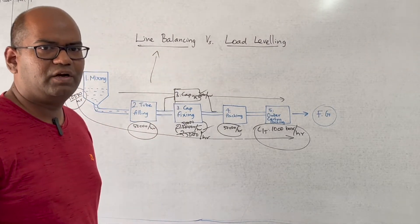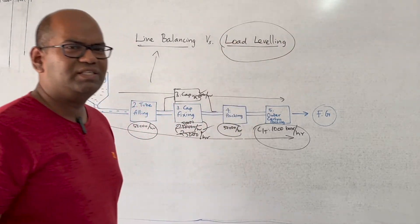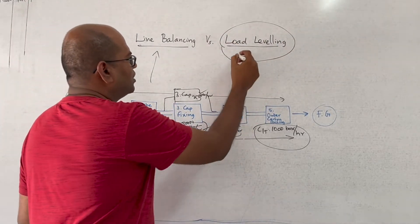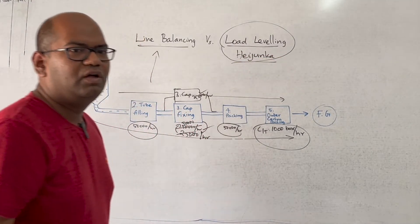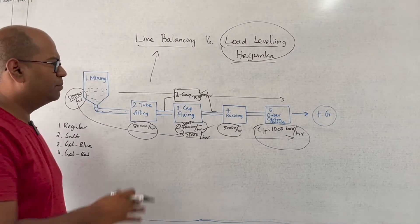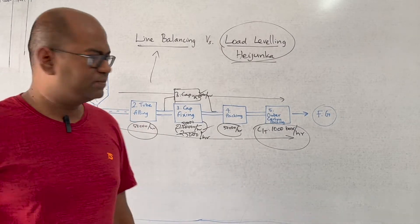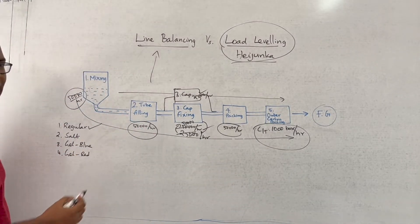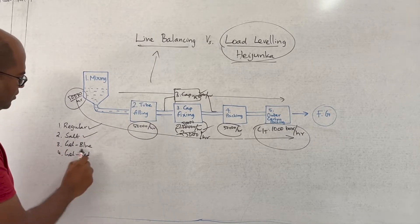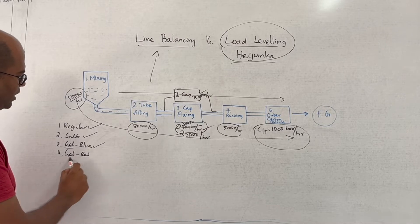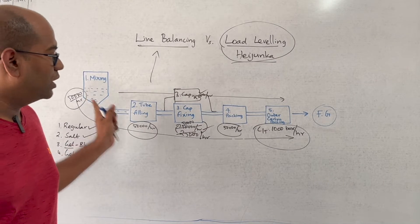Now let us look at the second concept — it's called load leveling, or heijunka, the Japanese word for load leveling. Let us say this company does not only produce one product — it has four different products: regular toothpaste, salt flavor, gel paste blue, and gel paste red. But there is only one production line.